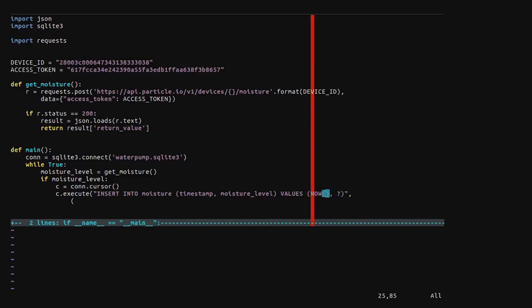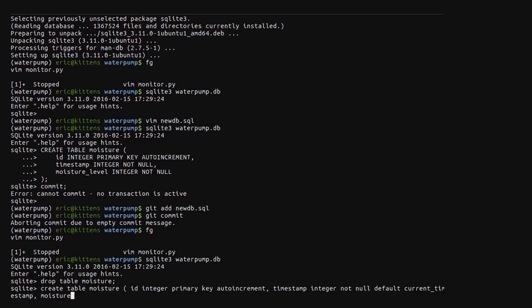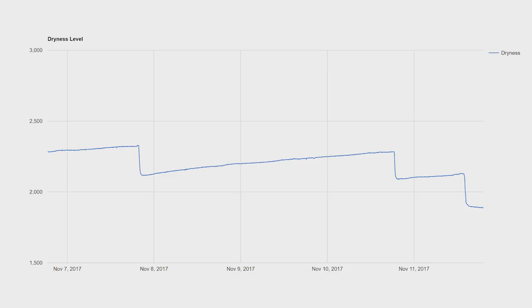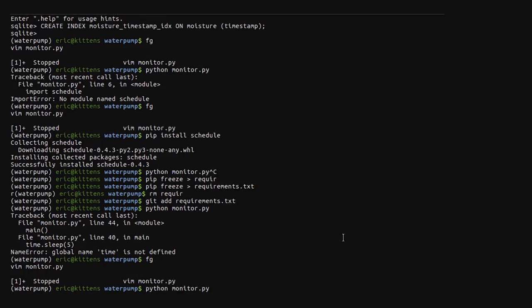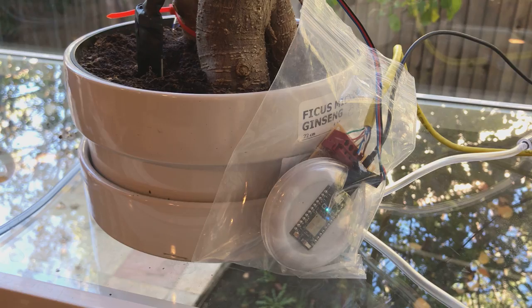On our server, we whipped up some Python code that queries the moisture every 15 seconds and stores it in a SQLite database. We reused some old code that we had sitting around to make a pretty Google chart, showing the values over time. Once we've had a chance to monitor for a few days and collect some more data, we can automate the watering. Until then, we can just look at the chart and manually trigger the pump when we need to.